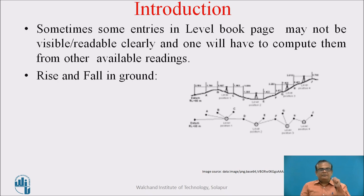Introduction. What happens friends? Sometimes some entries in a Level Book page may not be visible or readable clearly, so we have to find these missing entries from other available readings. That is why we are studying this particular topic. Now what is Rise and Fall in Ground? Here you can see, ground is continuously rising or falling in this fashion. Here, first three staff readings, they are on continuously rising ground. Then there is a fall and again there is a rise. So here there is a level, a dumpy level, which is being used for taking levels of different points.